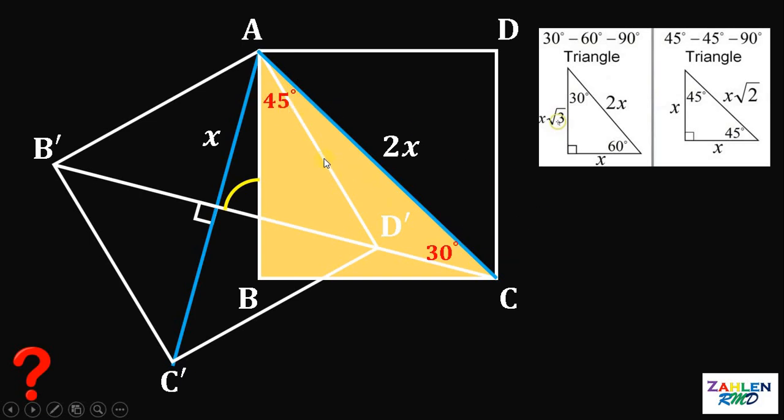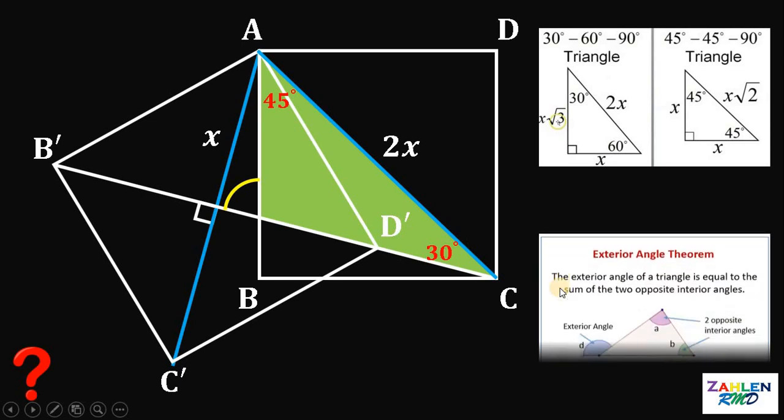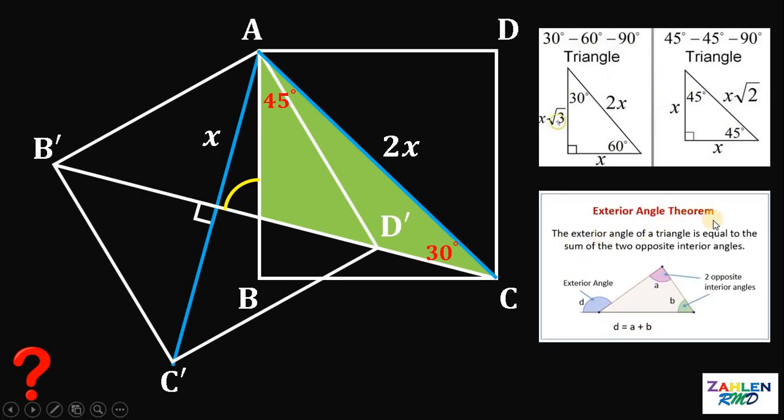Now, let's consider this obtuse triangle. And take note that this angle right here is what we want to find. And also, recall that we have a theorem that is related to this figure. So, let's recall the exterior angle theorem.